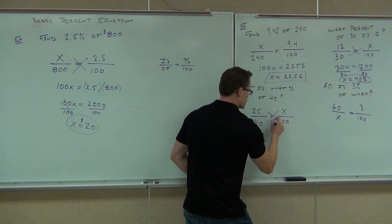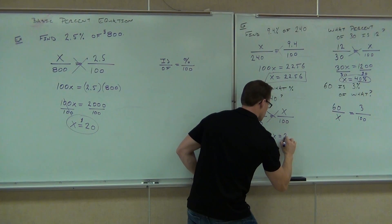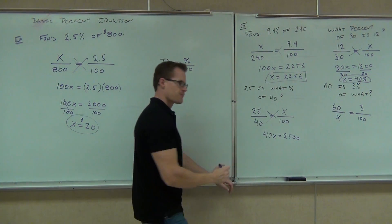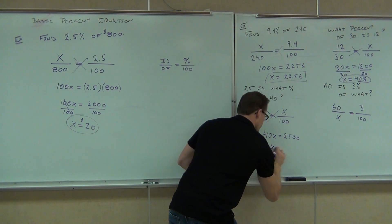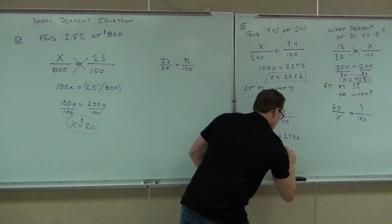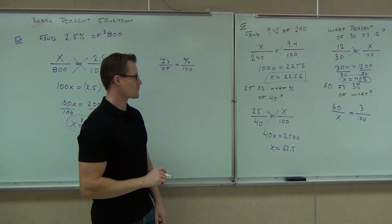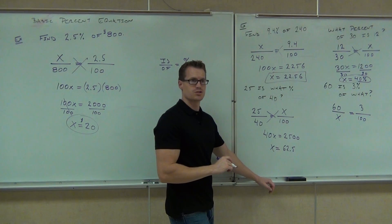Okay, next up, again, we'll cross-multiply. 40X equals 2,500. Divide that by 40, and what do you get? 62.5%. And is that a percentage as well? Yes.